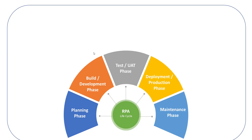Let's start with the Planning stage. The Planning stage is the first and crucial stage of the RPA life cycle. It works to select the right automation process, define its goals, and identify the processes that can be automated. Some organizations have two different phases within the Planning stage.